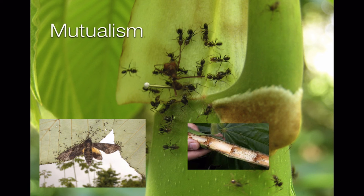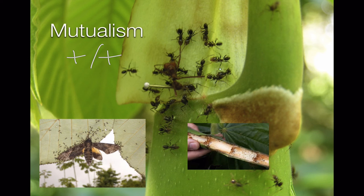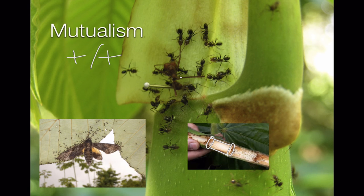Mutualism is when two species live together and help each other — a plus-plus relationship. For example, these ants live inside a tropical rainforest tree whose hollow stems form chambers. The ants chew a little hole in the stem and live inside these little apartments, and the plant provides a place for them to live. In exchange, the ants protect the plant. If a moth tries to lay eggs so its caterpillars can eat the leaves, the ants will defend the plant against this herbivore. Mutualism is when two species help each other and live very tightly together — a plus-plus relationship.